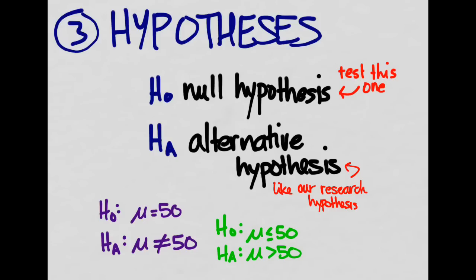Let's look at one more. If we want to prove our alternative hypothesis is that mu, the population mean, is less than 50, then we would set as our null hypothesis that the population mean is greater than or equal to 50. So again, the null and alternative hypotheses are always the opposites of each other.